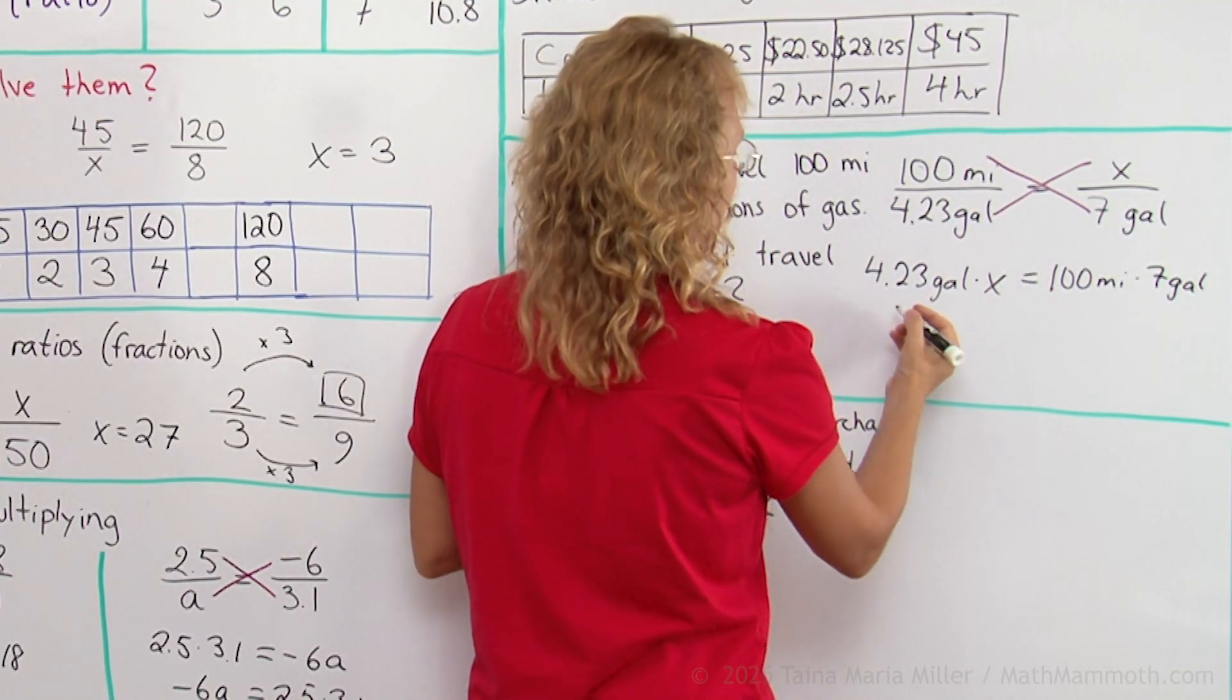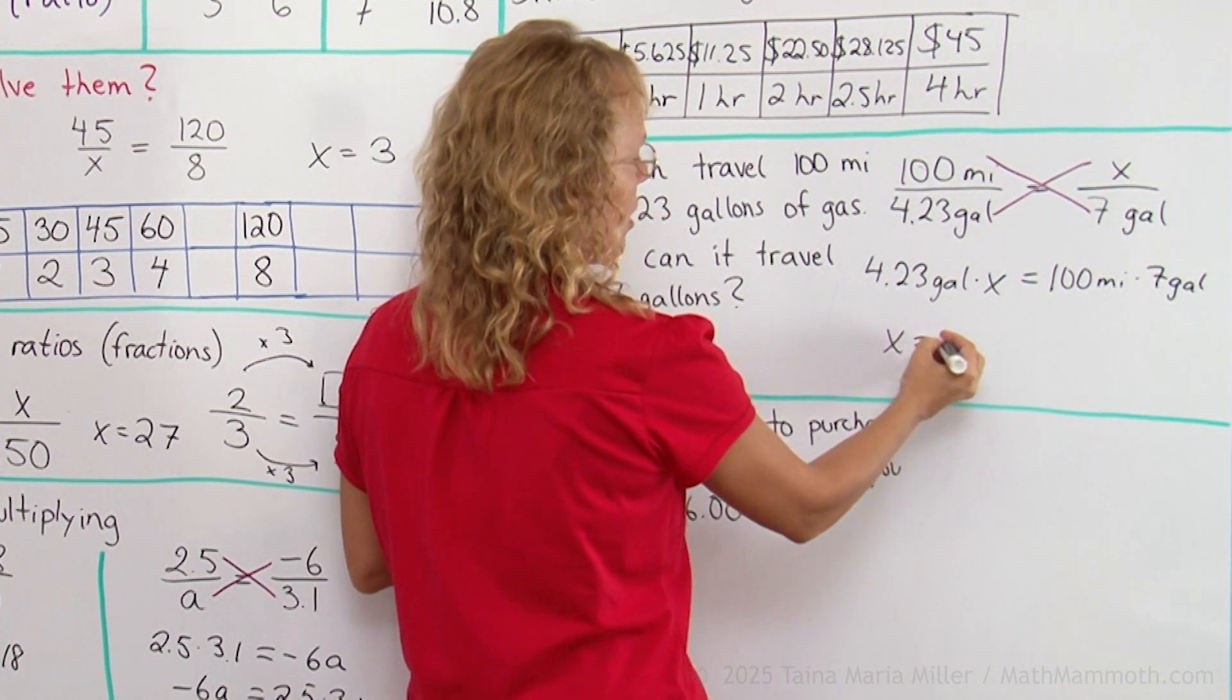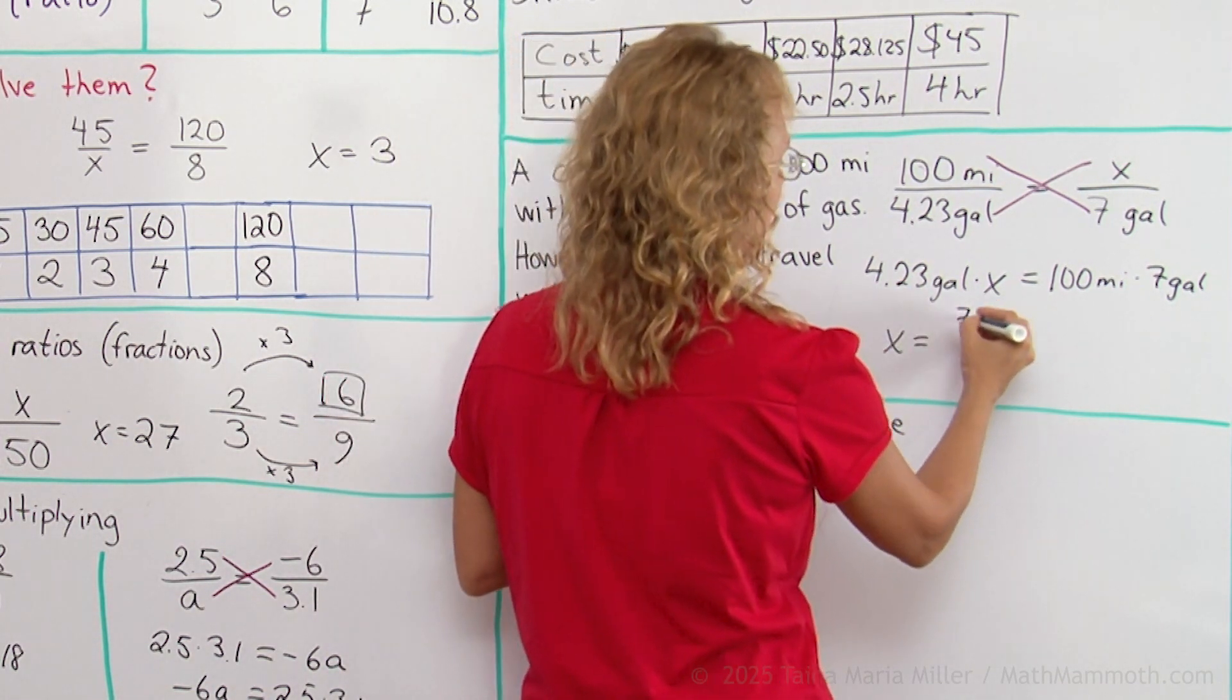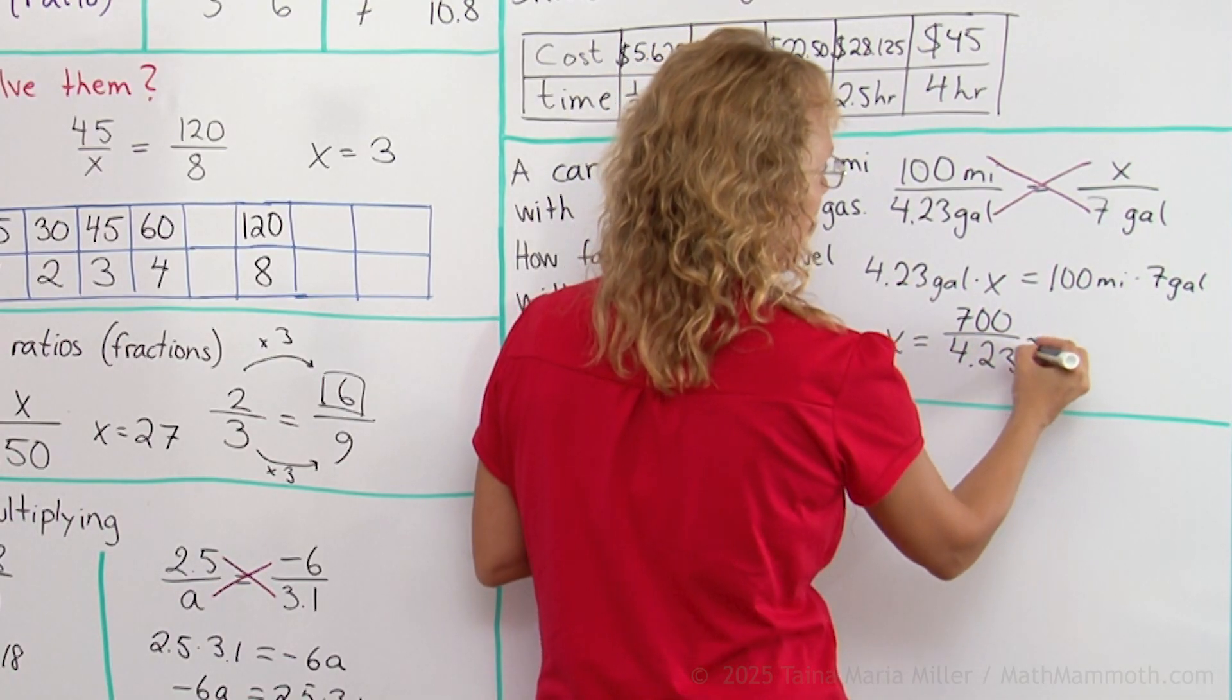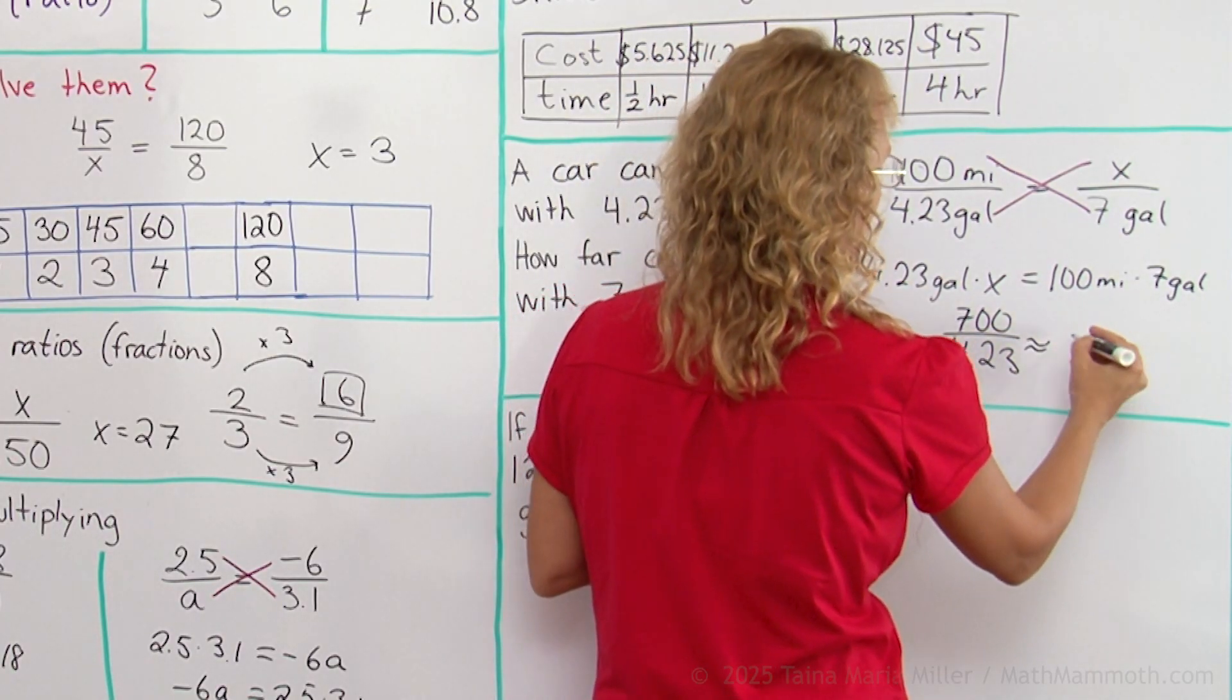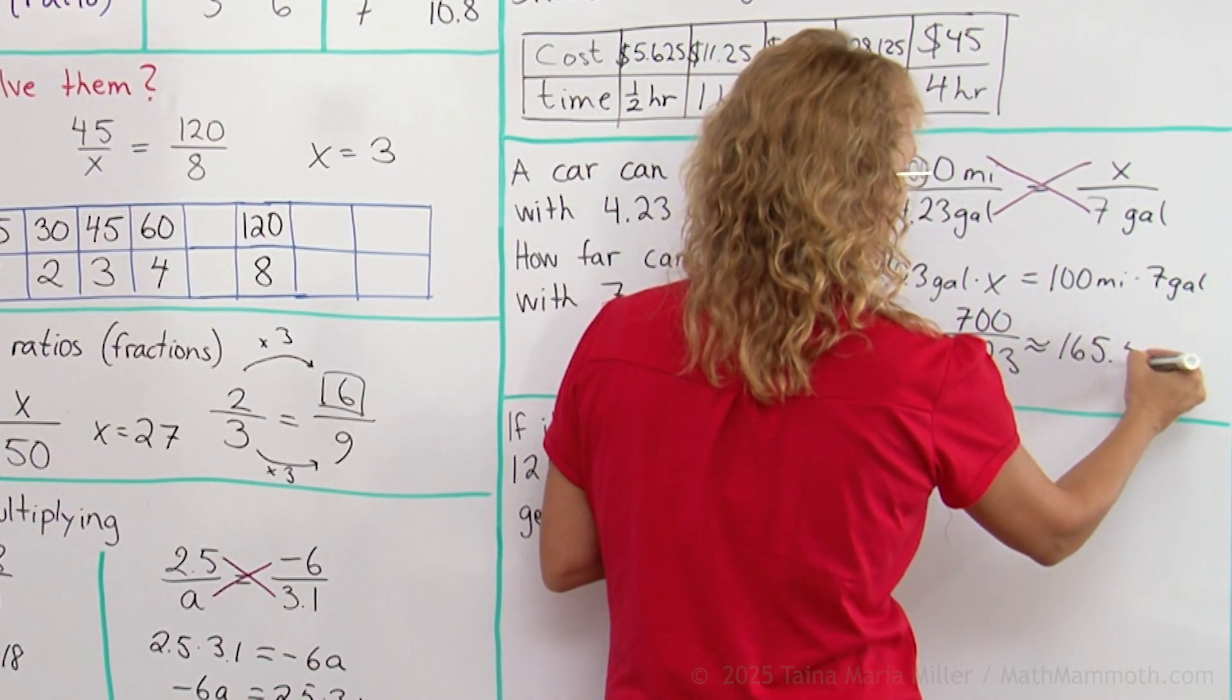Here I get 700 and here is 4.23. I need to divide both sides of the equation by 4.23, so it will be 700 divided by 4.23. And the answer for this is 165.5 miles.